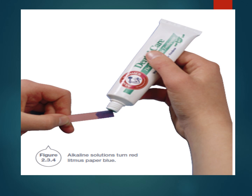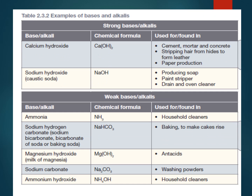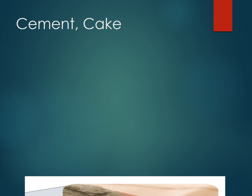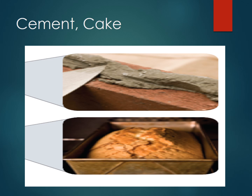An alkaline solution turns red litmus paper blue — you can see some toothpaste as an example. The table in your textbook lists bases, whether they're strong or weak, and their names. Cement is an example of a base — the lime involved in cement makes it very alkaline. And in baking, the rising agent in baking powder uses a base, something like carb soda.